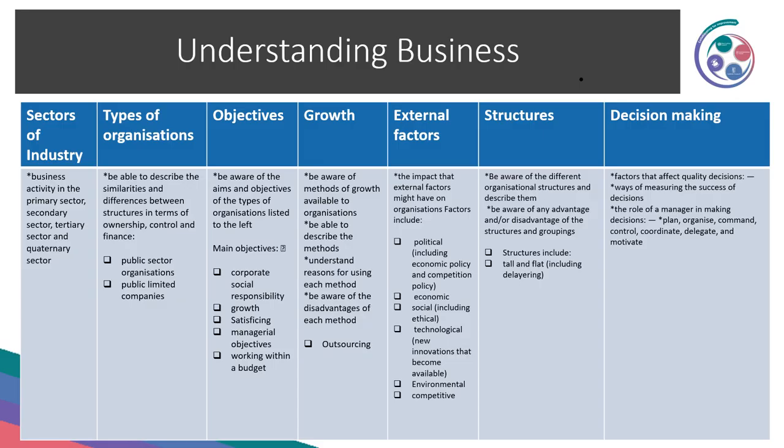We're going to start looking at Understanding Business. First we have sectors of industry — primary, secondary, tertiary, and quaternary. This lends itself to describe questions or a short distinguish question. Then we've got types of organisations, focusing on describing similarities and differences in terms of ownership, control, and finance — looking at public sector organisations and public limited companies. That kind of question lends itself to either a compare or distinguish question.